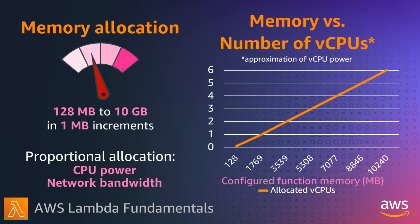An increase in memory size configures an equivalent increase in CPU available to your function. It's worth remembering that you pay for the memory allocated to your function, not the amount of memory your function uses. If you allocate 10 GB to your function and it only uses 3 GB, you are charged for the 10 GB. It's therefore a good idea to test your functions using different memory allocations to work out which is most beneficial for the function and your budget.